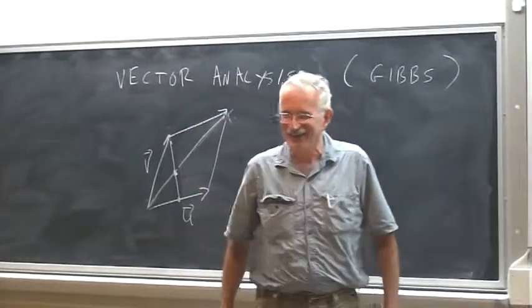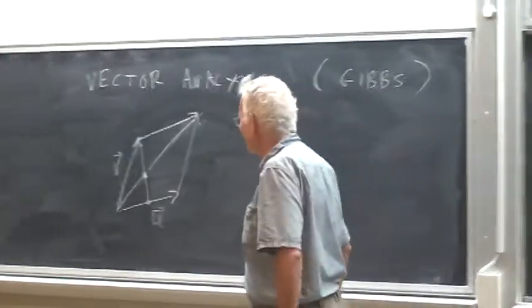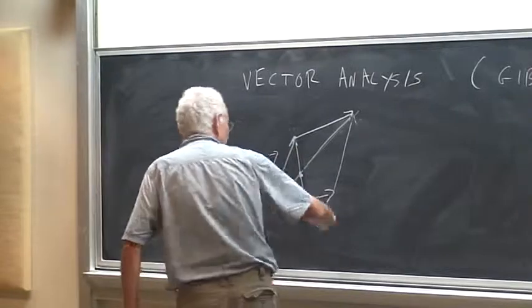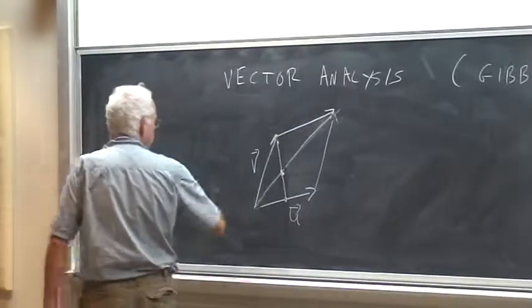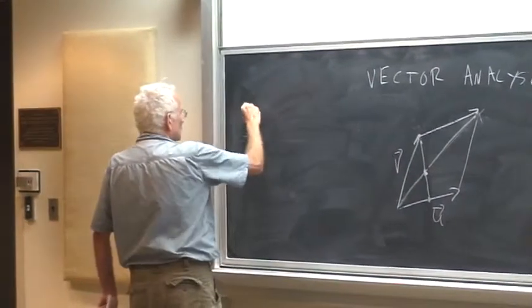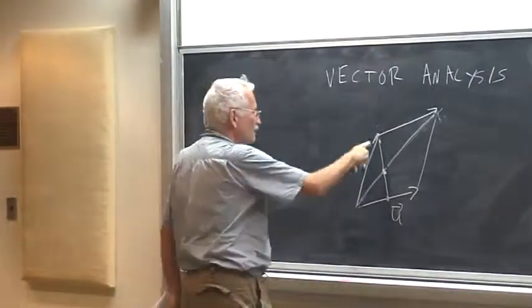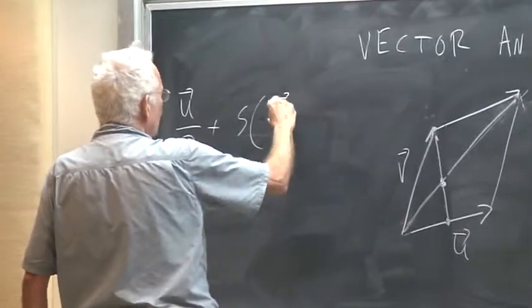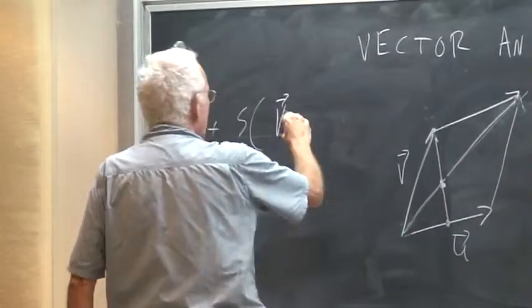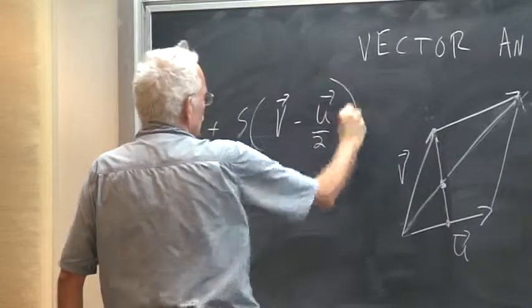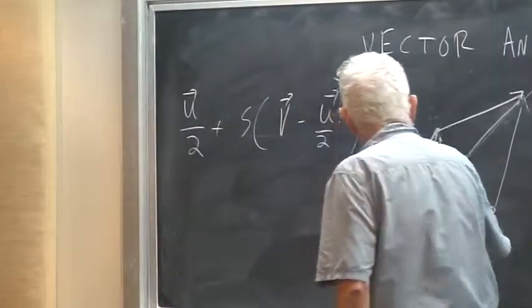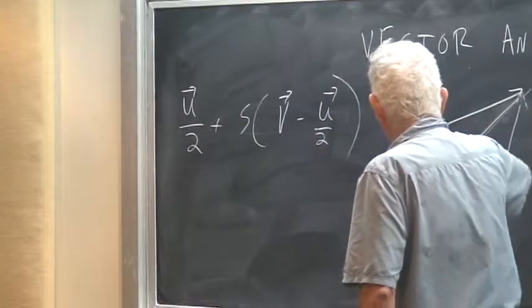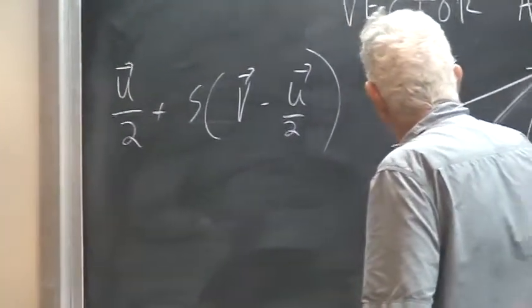So in honor of Leon, let's reconstruct the proof. This vector is U over 2 plus some number, let's call it S, times V minus U over 2. This point, this vector, U over 2, and then V minus U over 2, and it's some multiple of it.